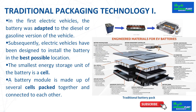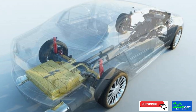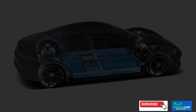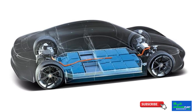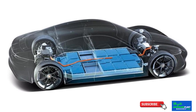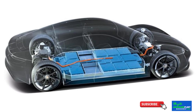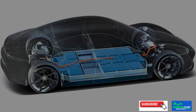In the first electric vehicles, the battery was adapted to the diesel or gasoline version of the vehicle, installing mainly in the trunk. Subsequently, electric vehicles have been designed to install the battery in the best possible location, which is on the floor of the vehicle on a skateboard platform, because it lowers the center of gravity and provides rigidity to the vehicle.